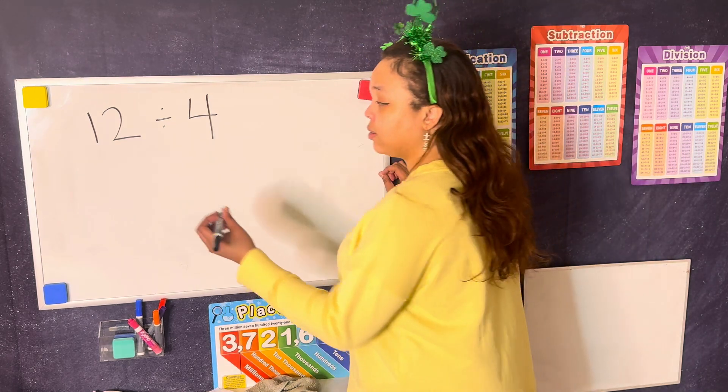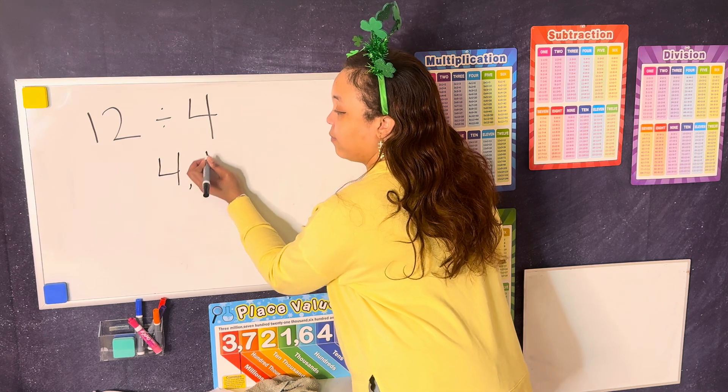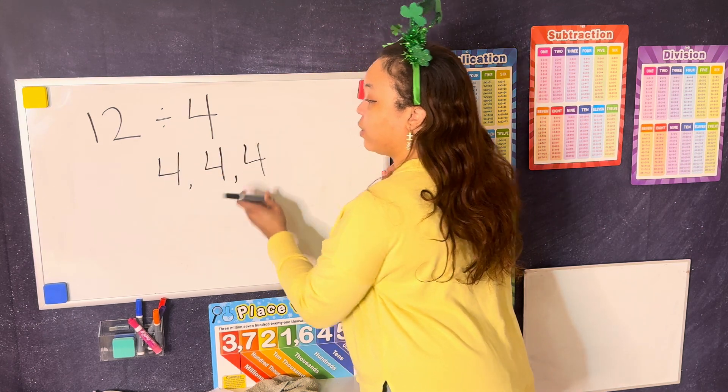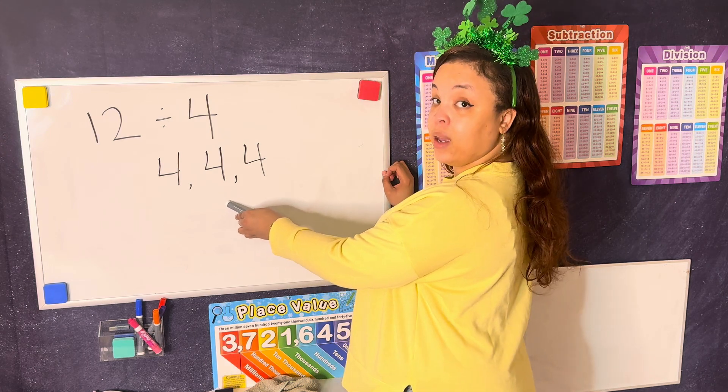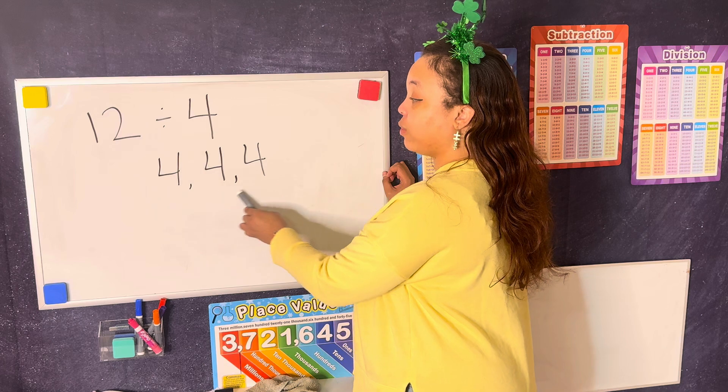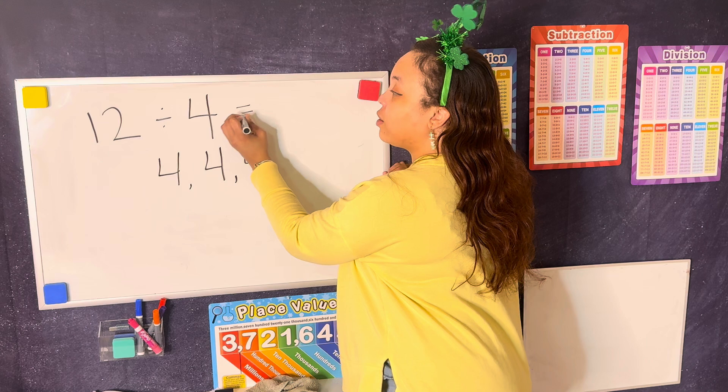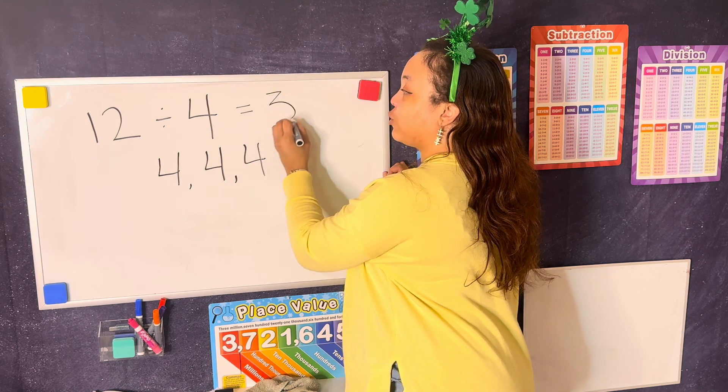To write it in a numerical style, we will just do 4, 4, and 4. Because 4 plus 4 is 8, plus 4 is 12. That means 3 groups of 4 goes into 12. So 12 divided by 4 is 3.